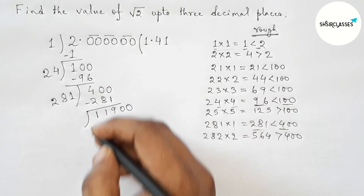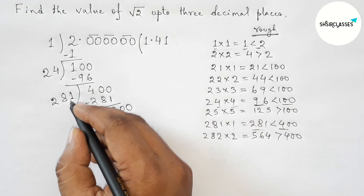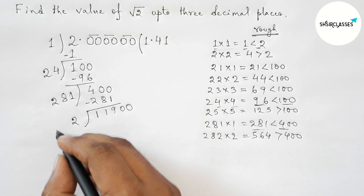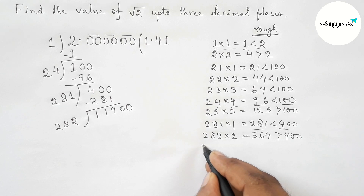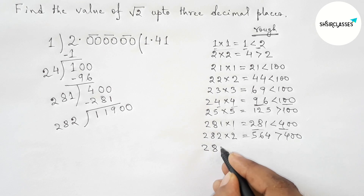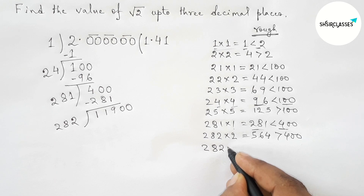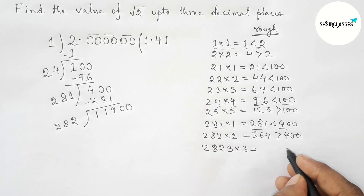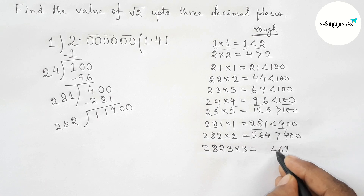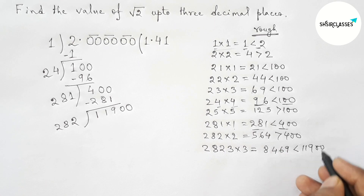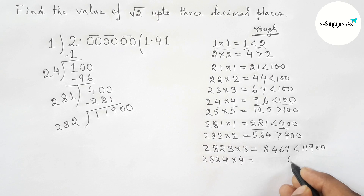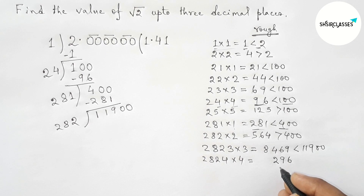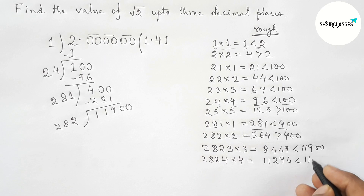Bring down the third pair of zeros to get 11900. Draw a division line. Take double of 1, giving 2, and the 28 stays the same, so the new divisor starts with 282. Place a digit beside 282 and multiply such that the result is less than 11900. Taking 3: 2823×3=8469, less than 11900. Taking 4: 2824×4=11296, less than 11900.